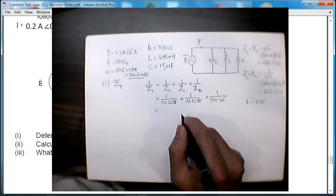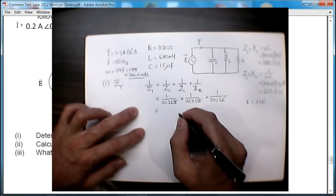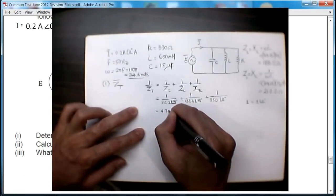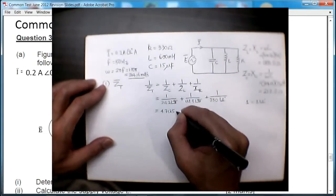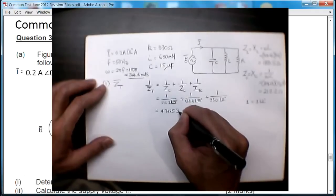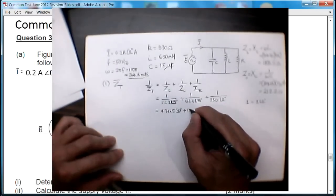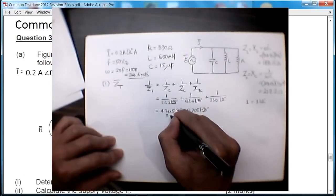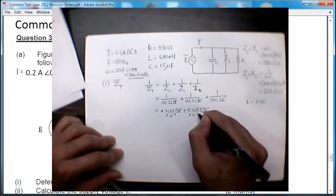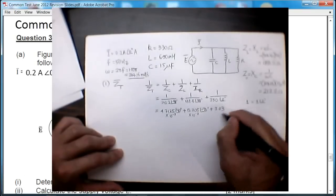So if I work it out, 1 upon 212.2 will give me 4.712 times 10^-3 at 90 degrees, plus 5.305 times 10^-3 at minus 90 degrees, plus 3.03 times 10^-3 at the angle of 0 degrees.